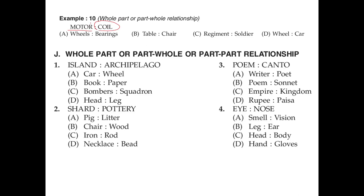The coil doesn't work without the motor, so it's a part-whole relationship. Looking at the options, wheels and bearing is not the right answer because bearing and wheels are similar parts of an object — without the bearing the wheels can't work. Similarly, coil is a separate thing and a motor is also a separate thing, but the motor needs the coil to work.